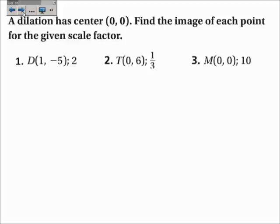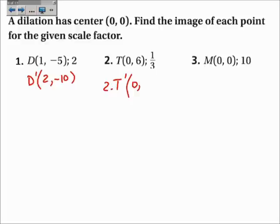So, if a dilation has center (0, 0) — which they all will in this class — define the image of each point for the given scale factor. Just multiply each coordinate x and y by the scale factor. D' will be equal to 1 times 2, which is 2, and negative 5 times 2, which is negative 10. Number 2: T' will be 0 times one-third, which is 0, and 6 times one-third, which is 2. Number 3: N' — 0 times 10 is 0, and 0 times 10 is 0, so it's (0, 0).